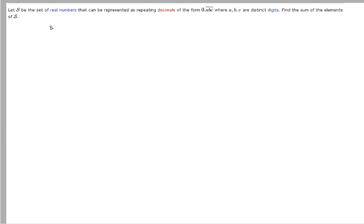Let s be the set of real numbers that can be represented as repeating decimals of the form 0.abc repeating, where a, b, c are distinct digits. Find the sum of the elements of s.